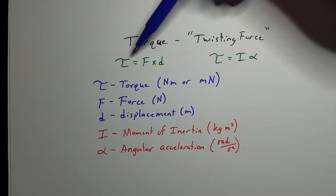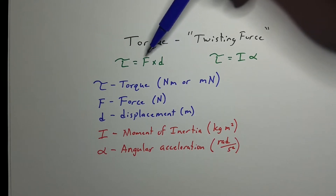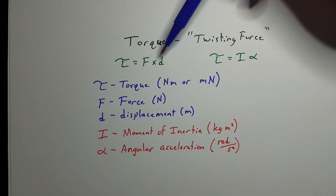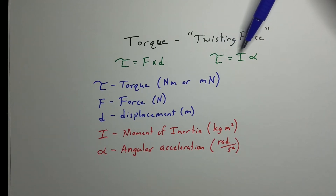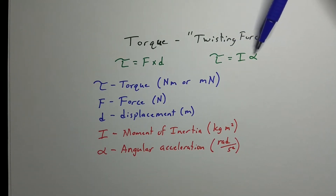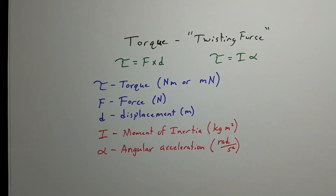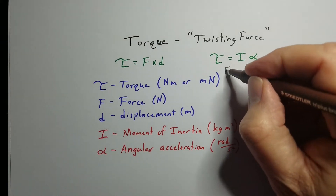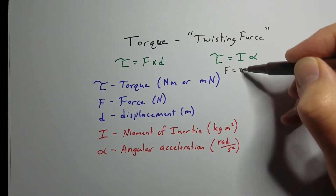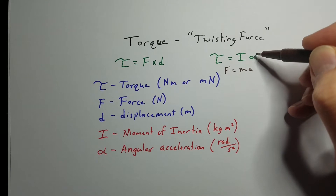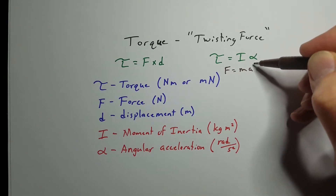We've got torque equals force cross distance. That cross means that the force and the displacement are at right angles to each other, or components are at right angles to each other. Or we can say torque equals the moment of inertia times the angular acceleration. This is the equation that most closely resembles F equals MA from linear motion, where torque is the analog of force, moment of inertia is the analog for mass, and angular acceleration is, well, acceleration.